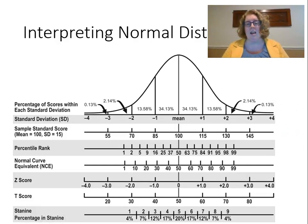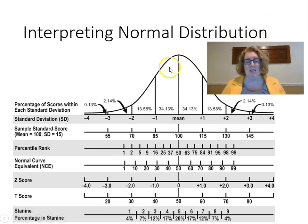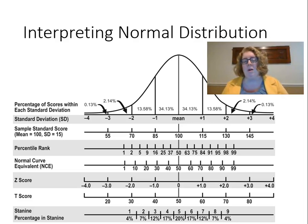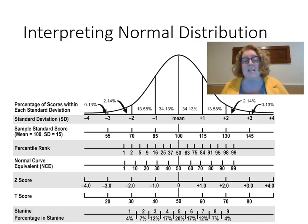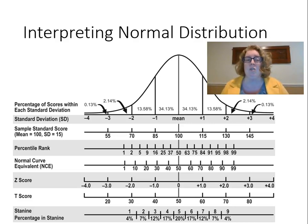There is a PDF in Canvas that looks similar to this chart, so pull it out and look at it as we go over this. You're going to need this sheet of paper when you take your quizzes. What I want to show you is how all of these types of scores really mean the same thing. No matter how you get the score — whether the school psychologist tells you a T-score, a standard score, or a percentile rank — they're really saying the same thing. I want you to understand this so that when you're in an IEP or gifted meeting, you can talk to parents as well.